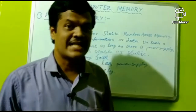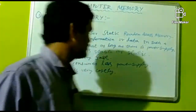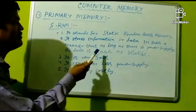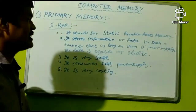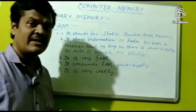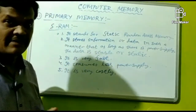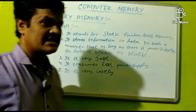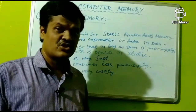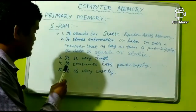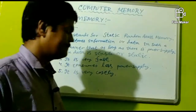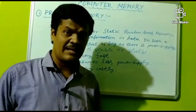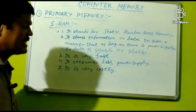SRAM means Static Random Access Memory. It stores data in such a manner that as long as there is power supply, the data will be stable or static. After the power supply is lost, the data will be lost. It is very fast — compared to DRAM which is slow — it consumes less power and it is very costly.